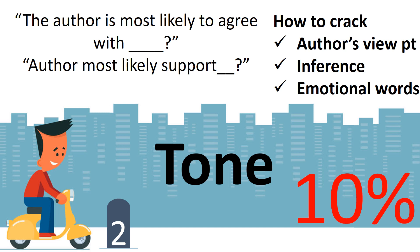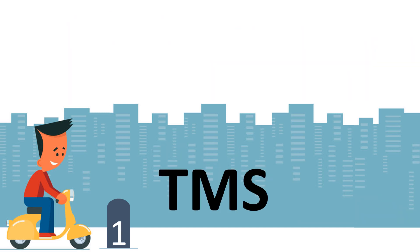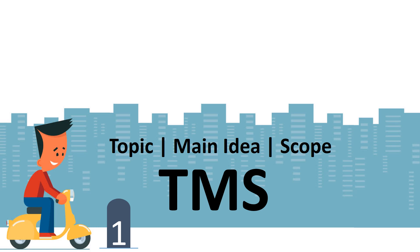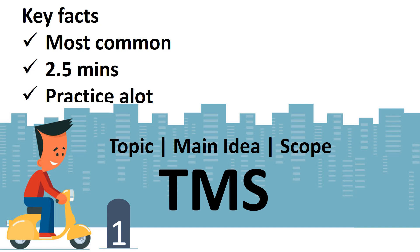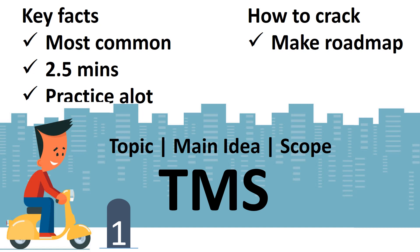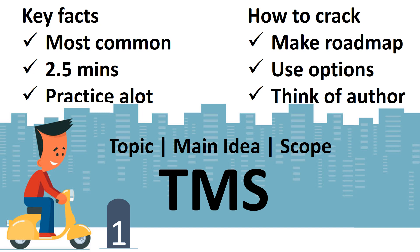At number one is TMS — which stands for Topic, Main Idea, and Scope of the passage. This is the main thing to understand. It is one of the most common question types — you'll see at least one in almost every passage, and you have about 2.5 minutes to solve it. The main concern is to get good accuracy, and we need to practice a lot on these topics. To crack it, you have to build a roadmap — I'll cover the roadmap in another video. Use options extensively: whichever option is out of scope, remove it. Think from the author's point of view — that's very important to crack this topic.